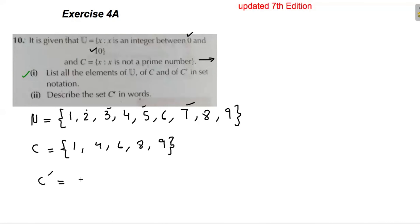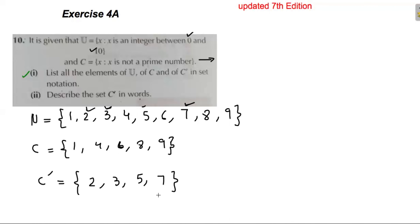C' (C dash) contains all elements of U other than those in C — that is, we remove C's elements from U. The elements remaining are: 2, 3, 5, and 7. These are the elements of C'.